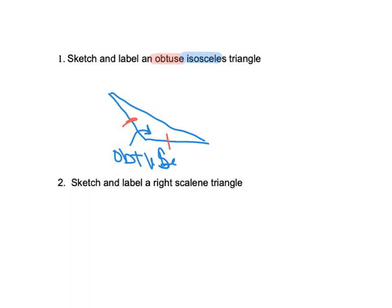Now sketch and label a right scalene triangle. Scalene means there are no sides that are the same. Right means there's a right angle. So if we sketch a right angle here and make ourselves a triangle — there's our right angle, and we always indicate a right angle with that little square. We're going to put one tick mark here, two tick marks here, and three tick marks there, to indicate that none of the three sides are congruent.